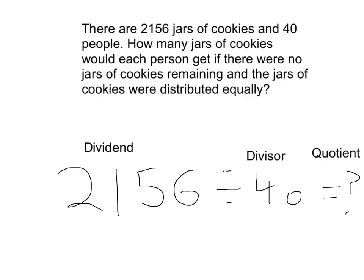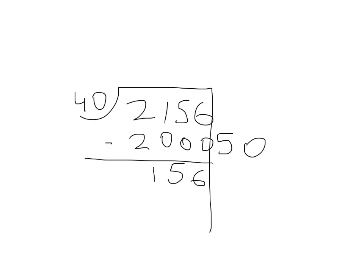I know that my dividend is 2,156 and my divisor is 40. Now I'm going to use the partial quotient algorithm to solve the equation.